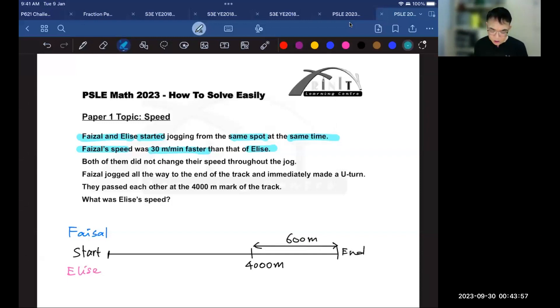Both of them did not change their speed throughout the jog. Faisal jogged all the way to the end, and then he immediately made a U-turn. So what happens now is that Faisal gets to the end, and then he comes back in this direction.